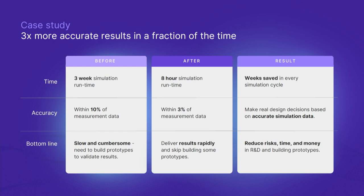Here's a case study with a recent customer. Before using QuantScient, they used a desktop-based approach that took three weeks of pure runtime for a simulation. When they compared those results to experimental measurement data from built prototypes, they were within 10% accuracy. When they switched, three weeks became eight hours and accuracy improved from within 10% to within 3% — three times more accurate results in a fraction of the time. This allowed them to iterate daily instead of monthly and make justified, accurate design decisions based on simulation data alone.